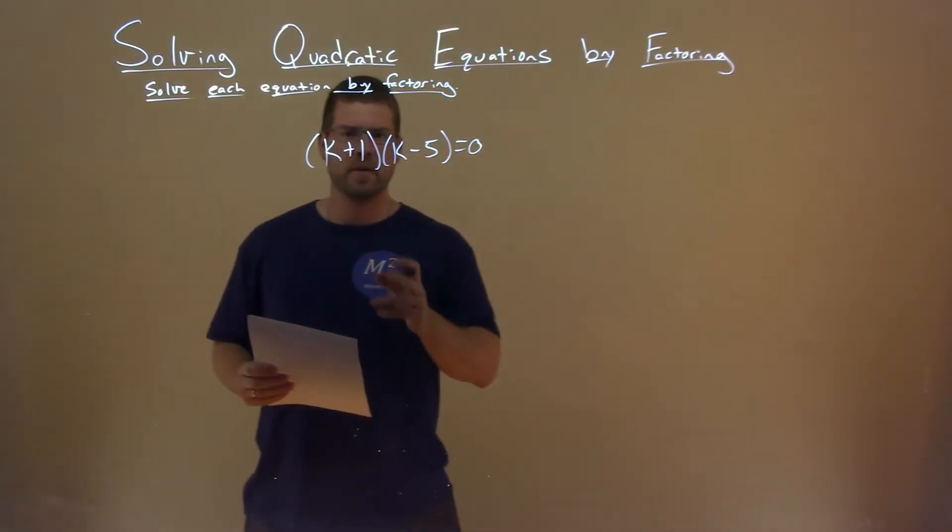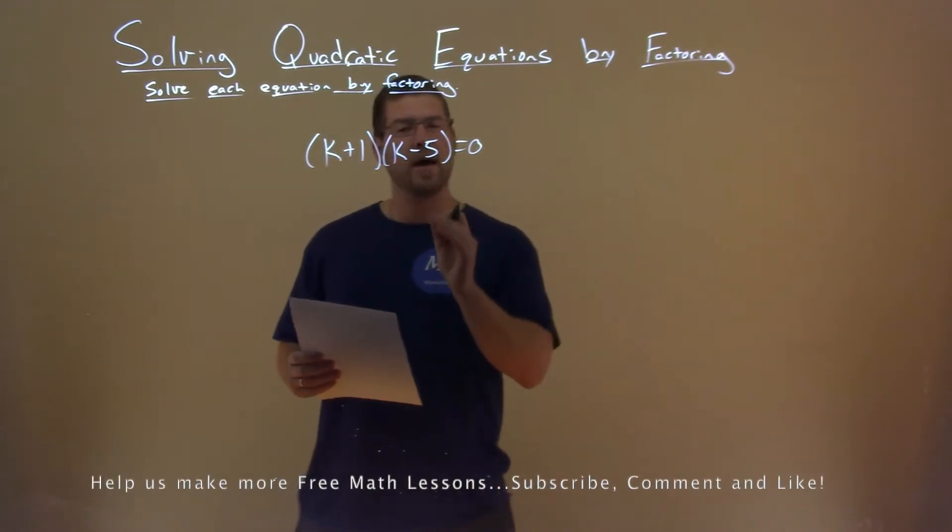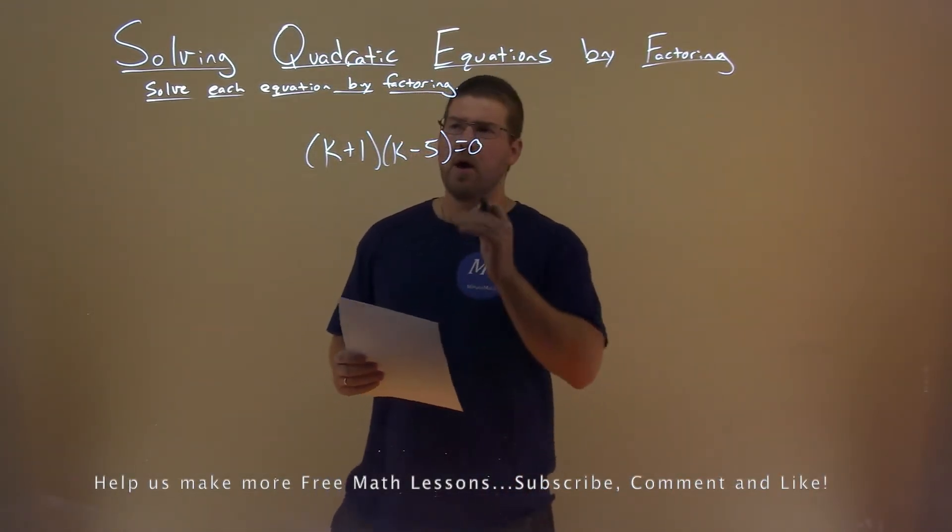We're given this problem right here: (k+1)(k-5) = 0. And we have to solve this.